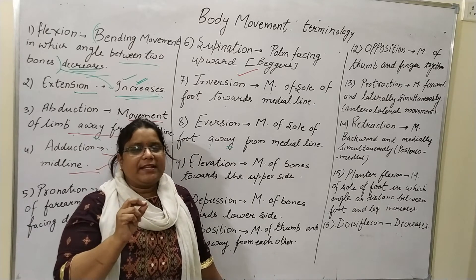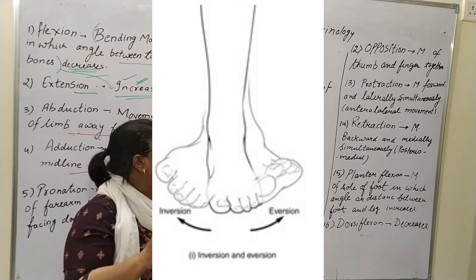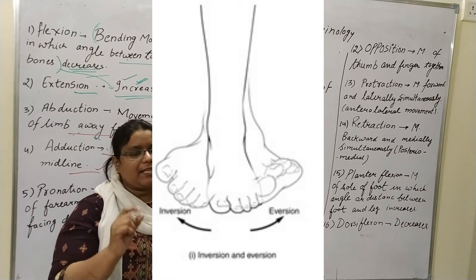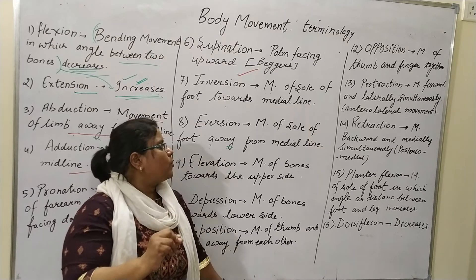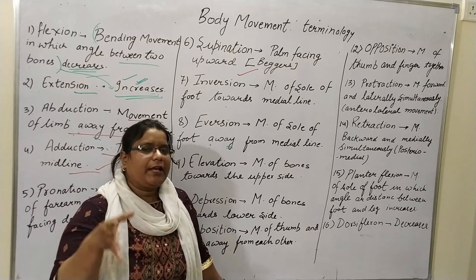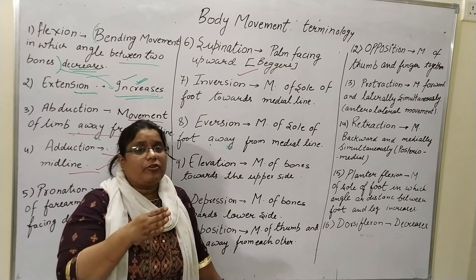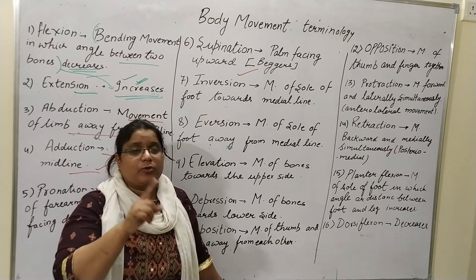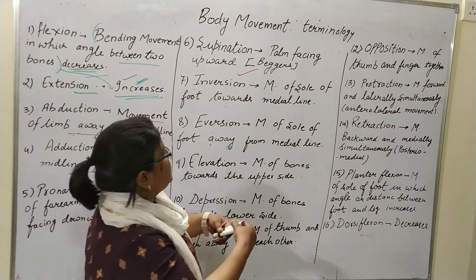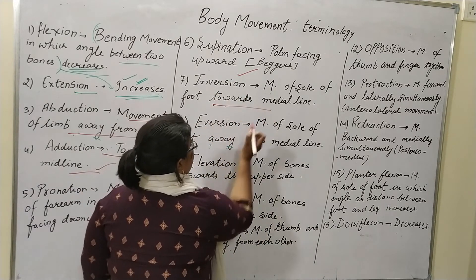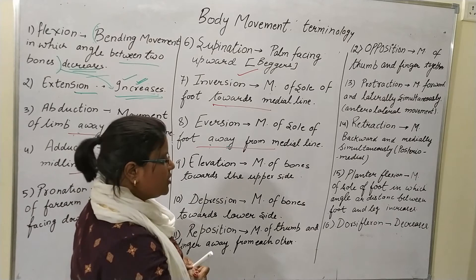In inversion the movement of the sole is towards the medial line, and eversion is the movement of the sole away from the midline. In the diagram you can see very easily that in eversion the movement of the sole is away from the midline.